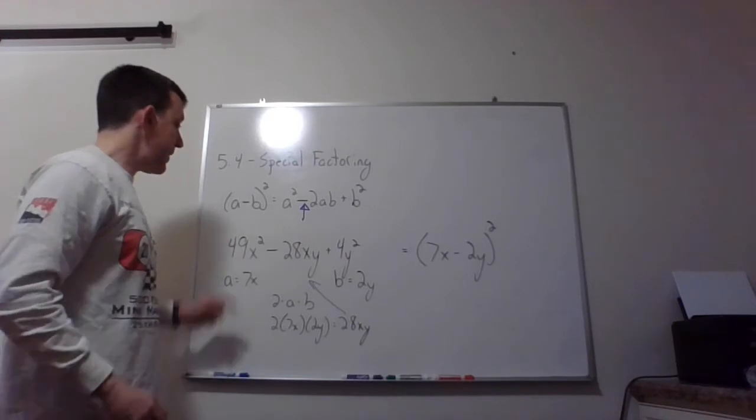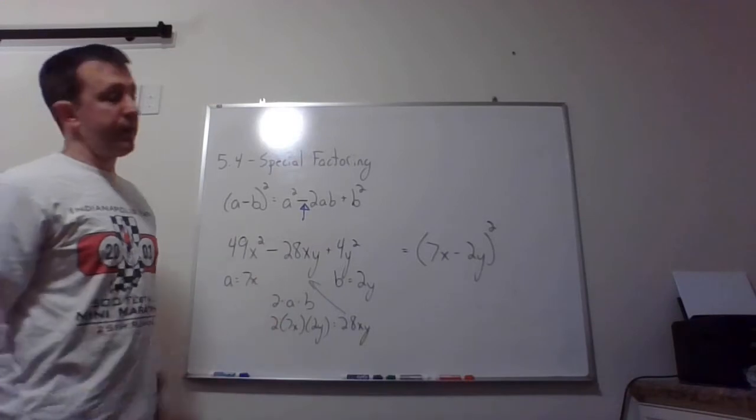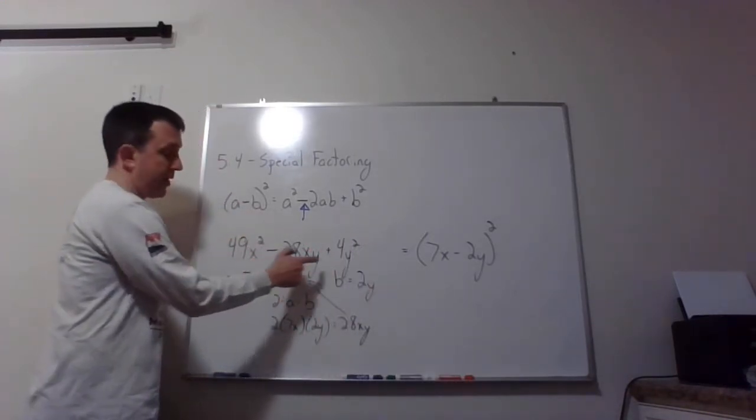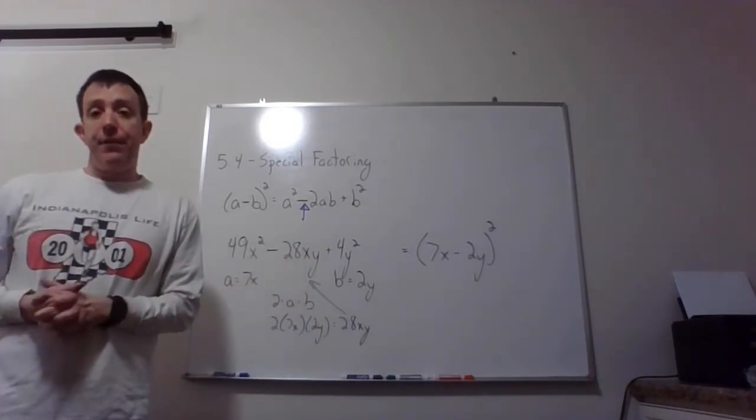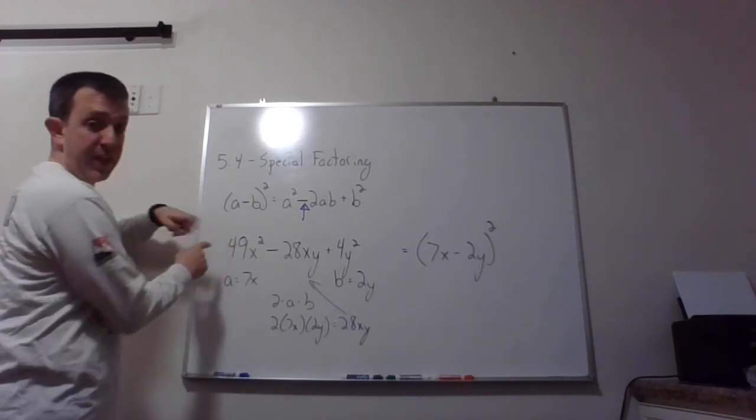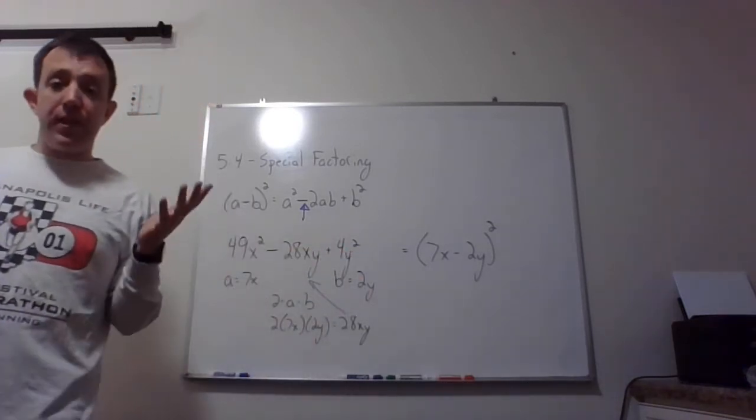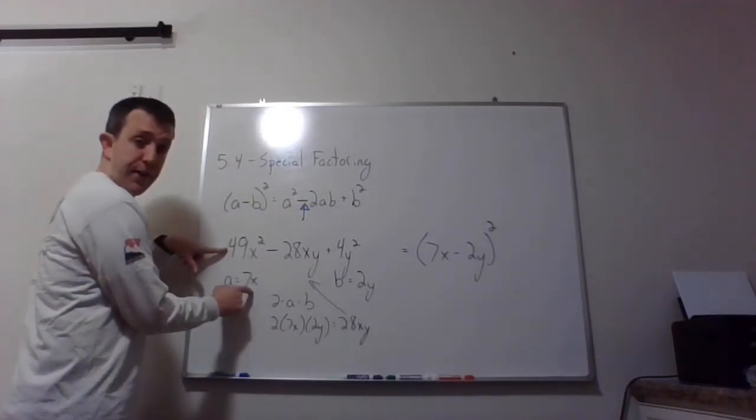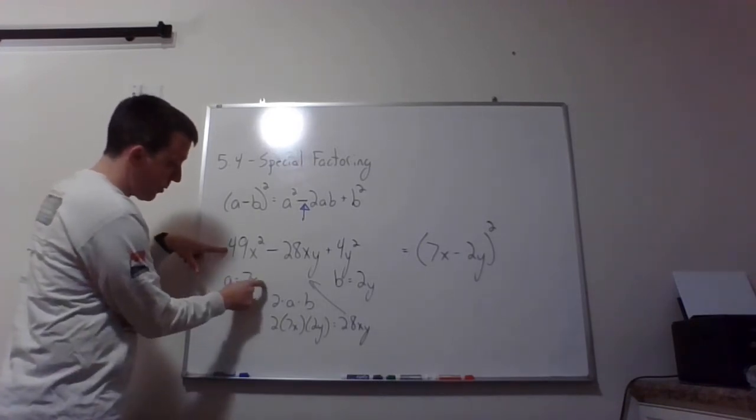So here's my example: 49x squared minus 28xy—uh-oh, I threw another letter in there, that's going to be weird—plus 4y squared. Please note it's only the one minus sign, they're not both minus signs, just this one. So again, I have the same kind of tip off that I had before. I have 49 here at the beginning. 49 is just screaming at me, hey, I am 7 to the second power. And at the end I have 4. 4 is telling me 2 to the second power.